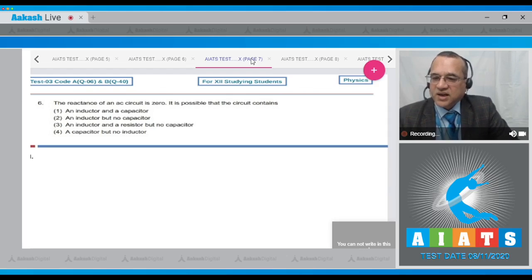Question number six: The reactance of an AC circuit is zero. It is possible that the circuit contains what? The reactance will be zero either if it is pure resistance or the combination of XL and XC would be zero. The first option is an inductor and a capacitor - that is possible. But if XL becomes equal to XC, then total reactance can become zero. An inductor but not capacitor, not true. An inductor and resistance but no capacitor, not true.